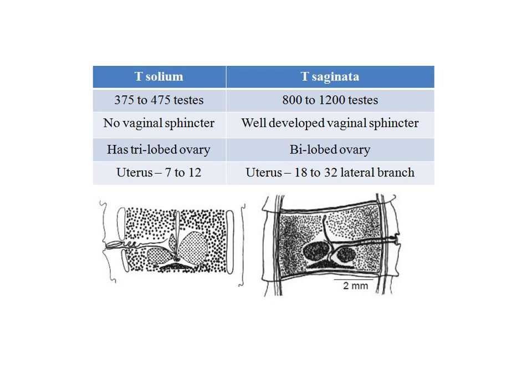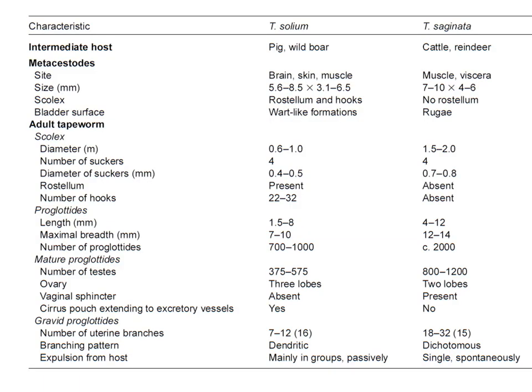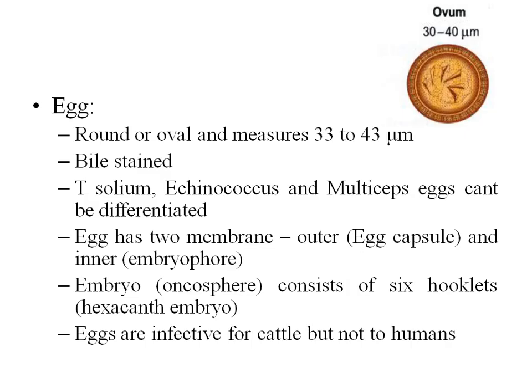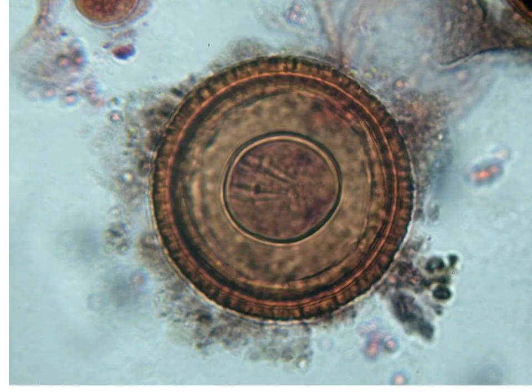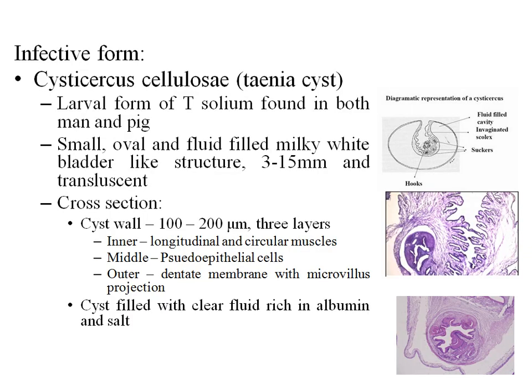Again comparing T. solium and T. saginata segments — as elaborated in the table, the key differences include testes count, vaginal sphincter, ovary lobes, and uterine branches. Though eggs cannot be differentiated between the two species, parasitic diagnosis through proglottid and scolex examination is necessary for species identification.